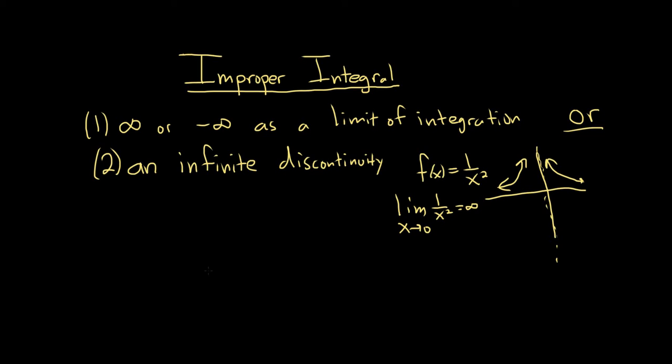Basically, you have some type of asymptote. So let's do some examples where we just identify if the integral is improper or if it's not improper. And the question will say, is it improper? We'll just say yes or no.